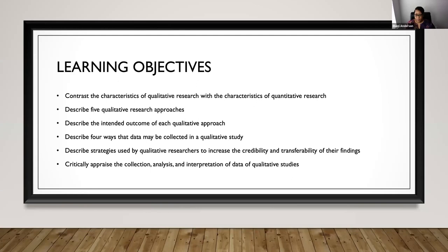Our learning objectives include: contrasting the characteristics of qualitative research with quantitative research; providing a description of five qualitative research approaches; describing the intended outcome of each qualitative approach; describing four different ways that data may be collected in a qualitative study; describing strategies used by qualitative researchers to increase credibility and transferability; and critically appraising the collection, analysis, and interpretation of data of qualitative studies.